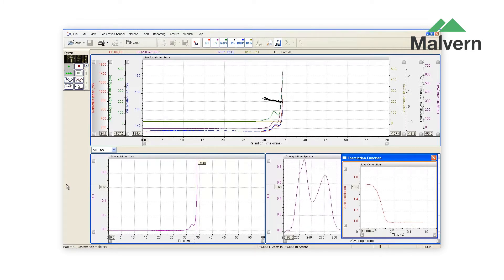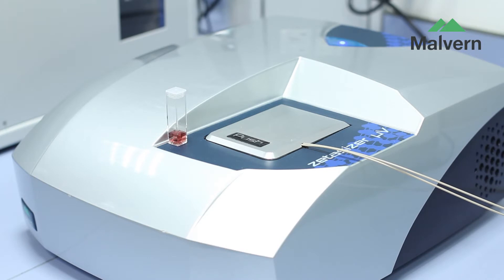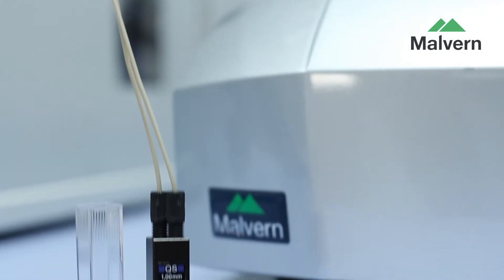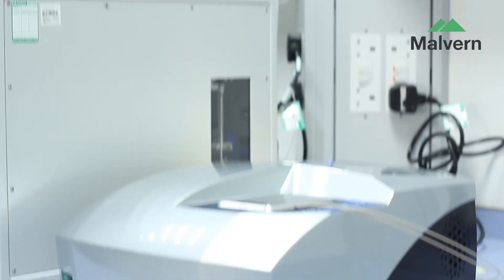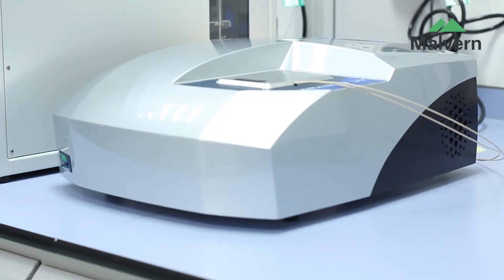The class-leading Omnisec software allows full and rapid access to both raw data and calculated results. For ultimate versatility and sensitivity, the Zetasizer Micro V enhances your capabilities for both batch DLS and SEC measurement of proteins.